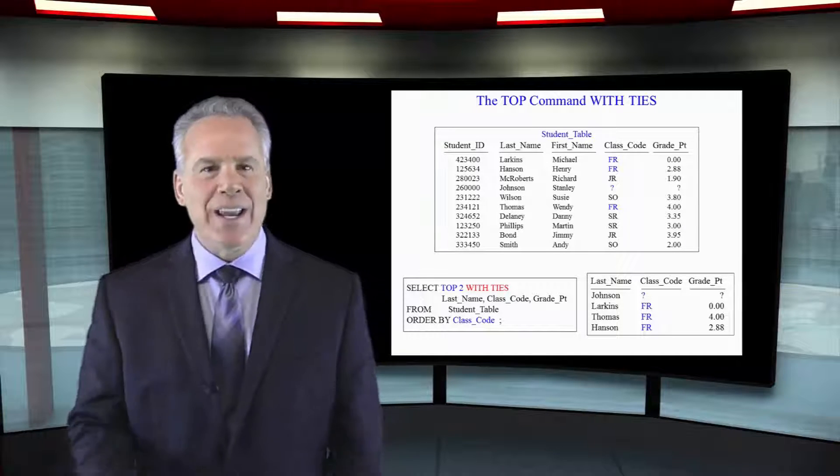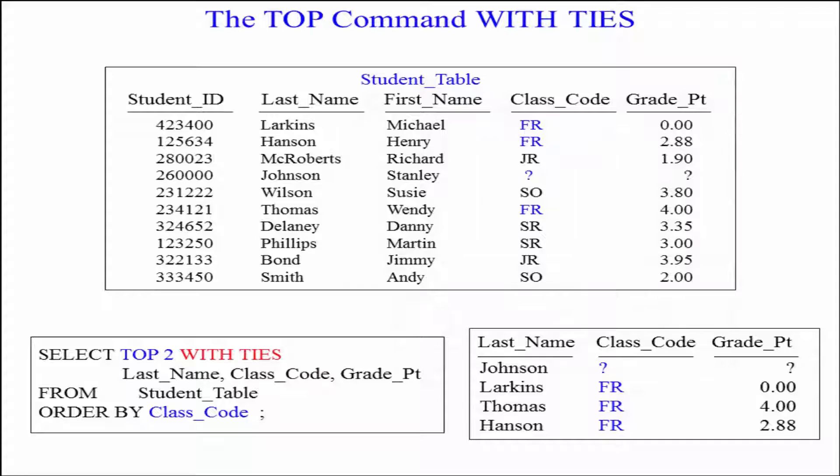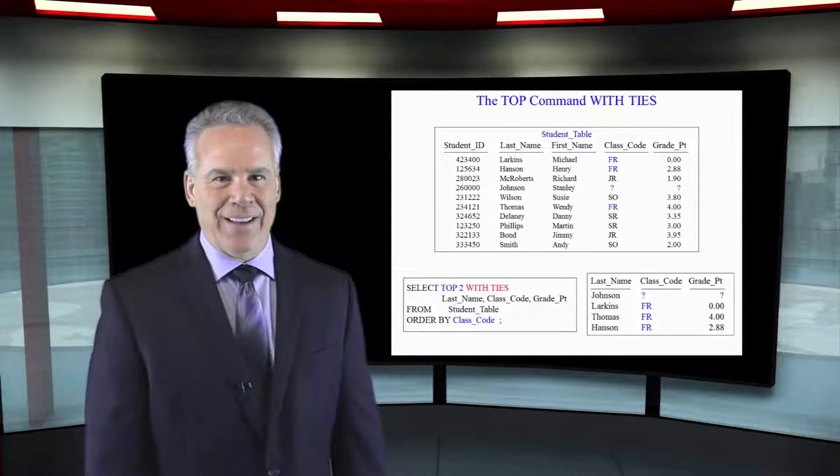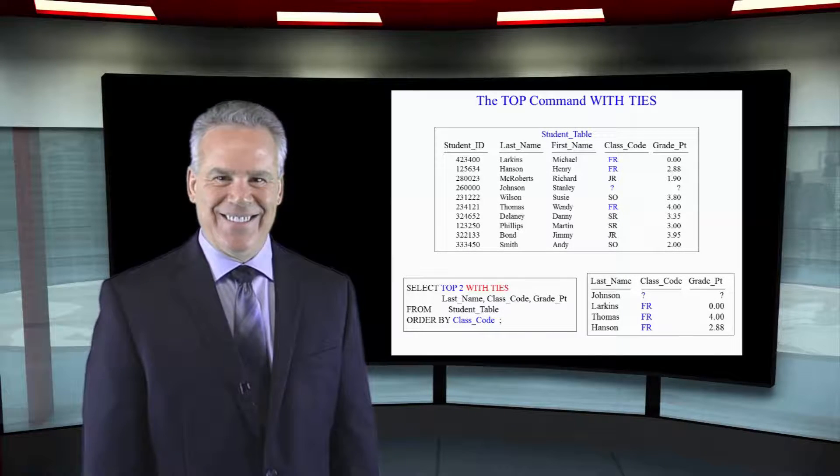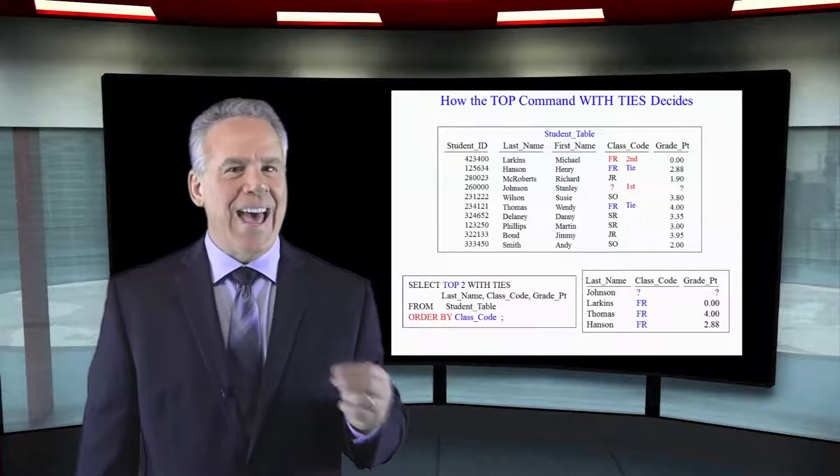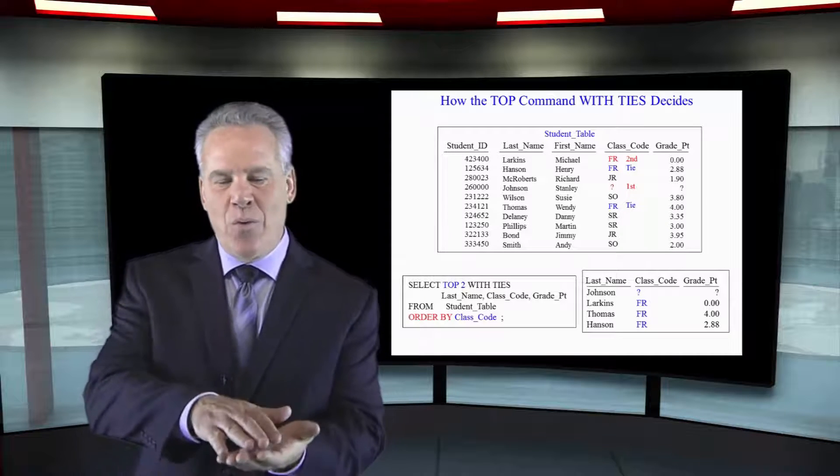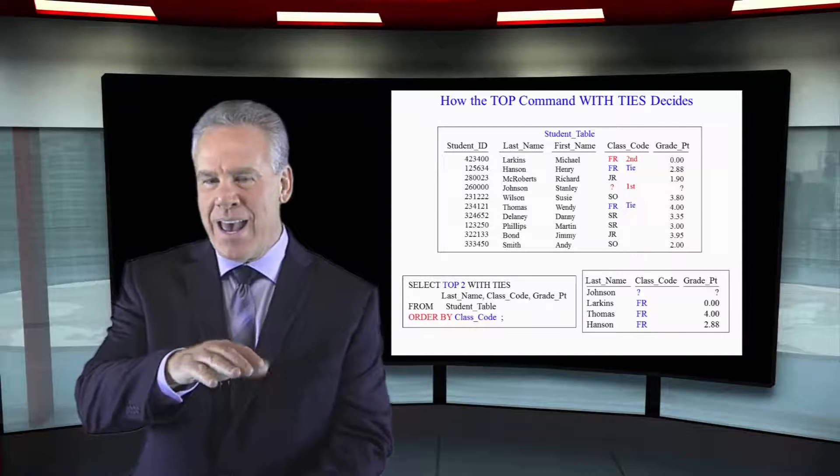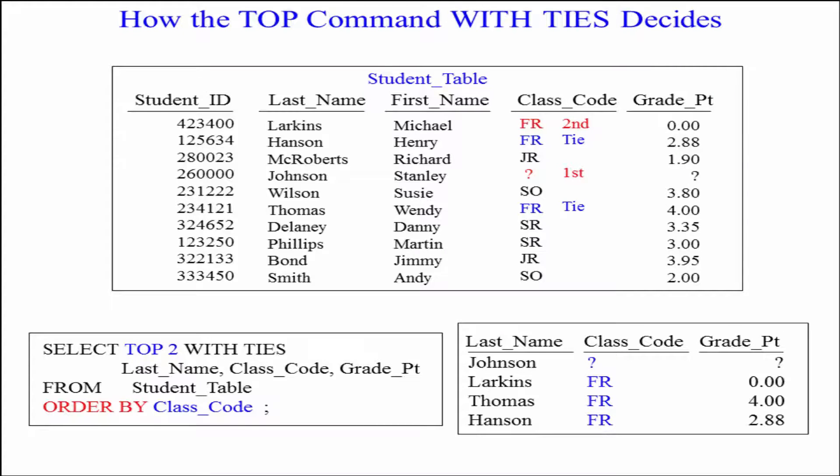Let's take a look at this query and this answer set. Here I say, I would like to select the top two with ties. Notice that it's ordered by class code down here. So we've got four rows that have come back. Do you know why? We ordered by class code. So once the order by class code came back.